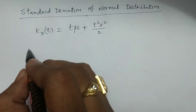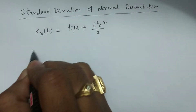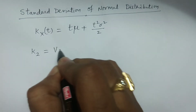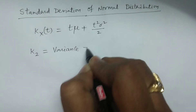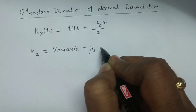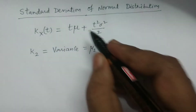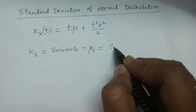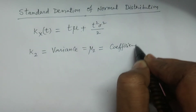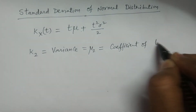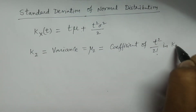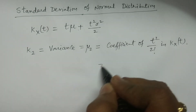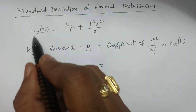If we want to calculate variance directly, we consider the second cumulant k₂. k₂ is nothing but the variance — k₂ is μ₂, so it is the variance. k₂ is calculated with the help of the cumulant generating function; it is the coefficient of t²/2! in K_X(t). This is what the calculation requires.